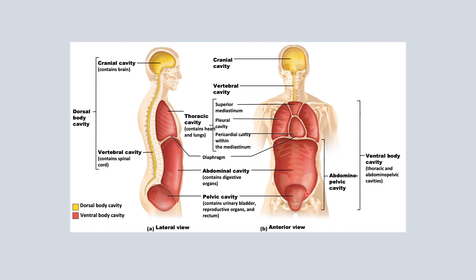In the abdominal cavity, we're going to have abdominal organs like the stomach and the intestines — most of them will be digestive organs. Then when we move on to the pelvic cavity, we're going to have organs such as the bladder, reproductive organs, and the rectum.